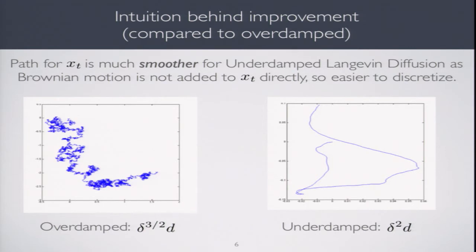On the right, we see the sample path of underdamped Langevin diffusion. Here, Brownian motion is not added directly to your position. Rather, it's added to your velocity. And then your position evolves as velocity. So dx = v_t dt. And v_t is almost surely bounded by some nice term. You can see the sample path of x is a lot smoother in underdamped. That's the main intuition for why our discretization error is much better at δ² compared to δ^(3/2).